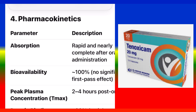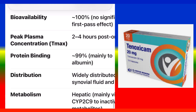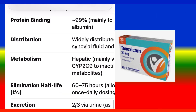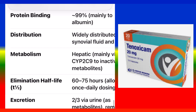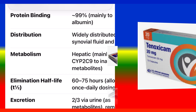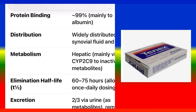Pharmacokinetics: Absorption — rapid and nearly complete after oral administration. Bioavailability — 100%, no significant first-pass effect. Peak plasma concentration (Tmax) — 2–4 hours post-oral dose. Protein binding — 99%, mainly to albumin. Distribution — widely distributed into synovial fluid and tissues. Metabolism — hepatic, mainly via CYP2C9 to inactive metabolites.